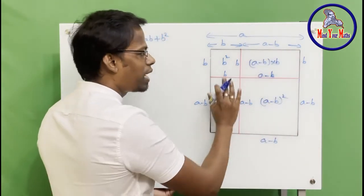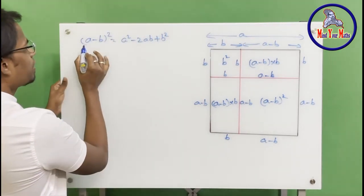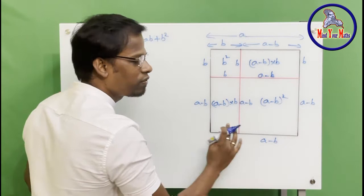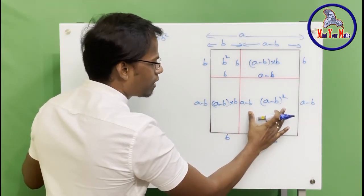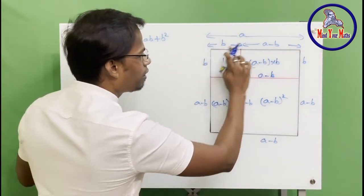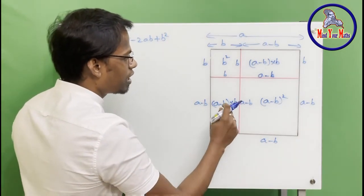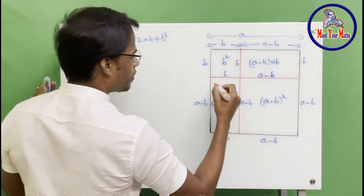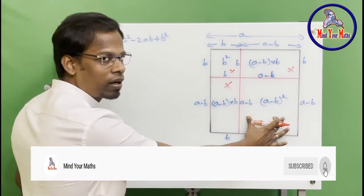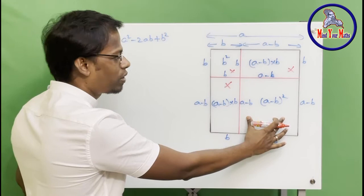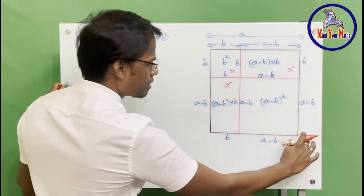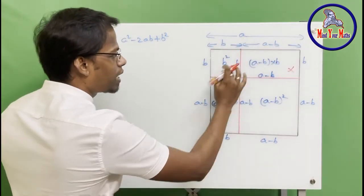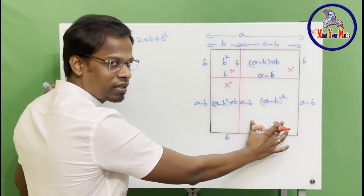We have found the area for all the partitioned regions. Now we need to find (a - b)², the whole square. This is the square we are going to find. For that, we know the big square. From the big square, if you remove this one, this one, and this one — those three areas — you will be left with only the (a - b)² square. So we subtract those three areas from the big square's area.